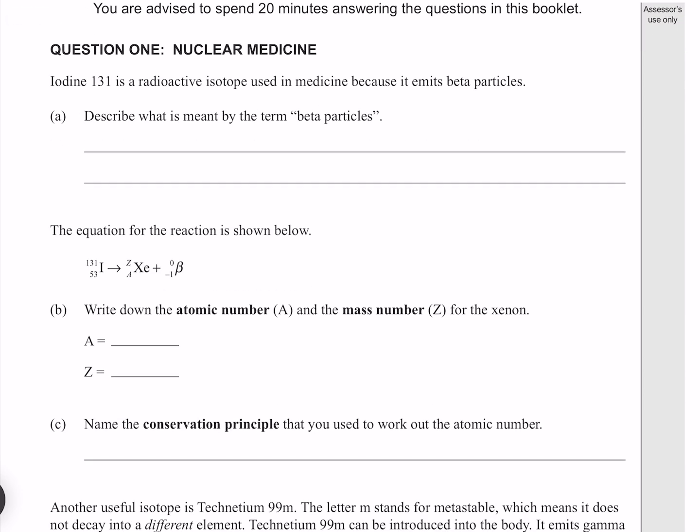Iodine-131 is a radioactive isotope used in medicine because it emits beta particles. Describe what is meant by the term beta particles. Beta particles are electrons.